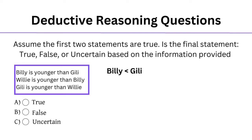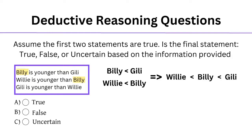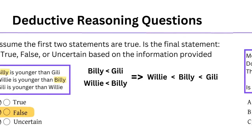Billy is younger than Gilly, and Willie is younger than Billy. Notice the connection between these statements — both mention Billy. This is the first thing to look for in these questions, as it helps us connect the information. When we connect the two statements, we get Willie, who is younger than Billy, who is younger than Gilly. The conclusion statement says Gilly is younger than Willie, and as we can see from our connected statement, this is false.